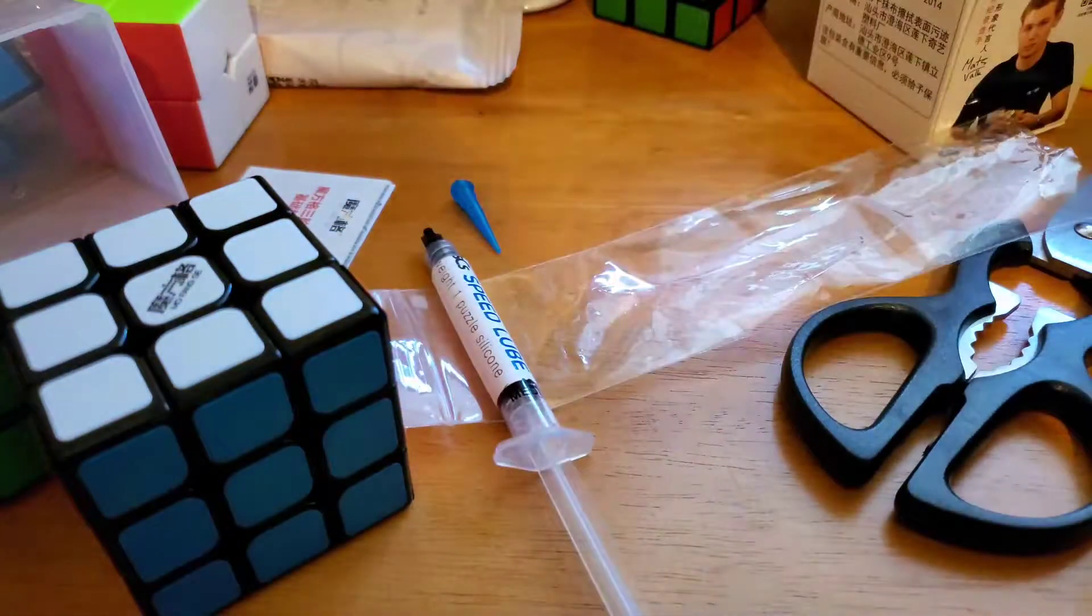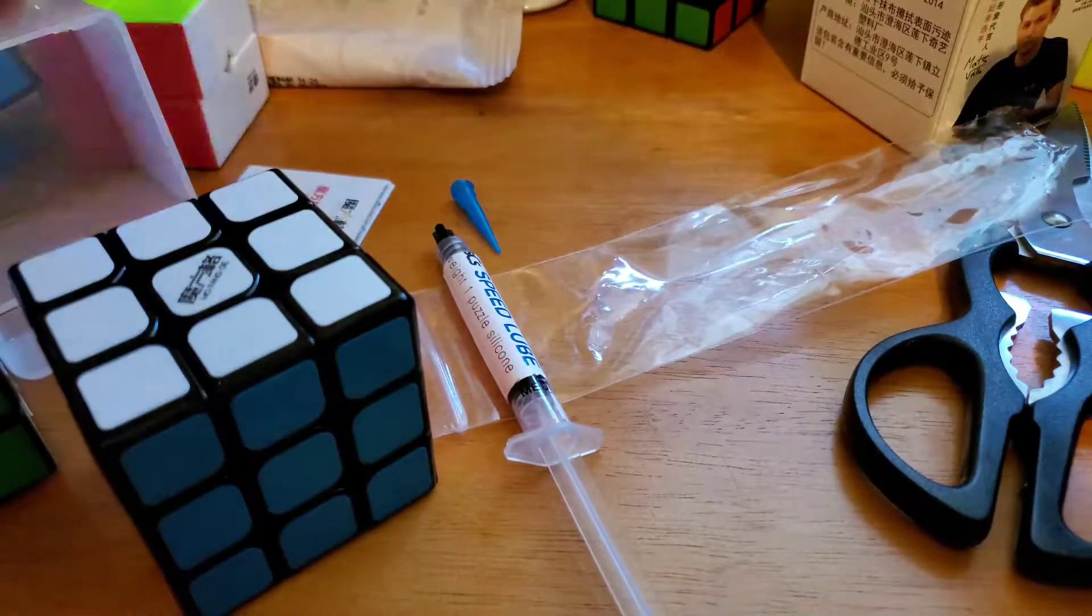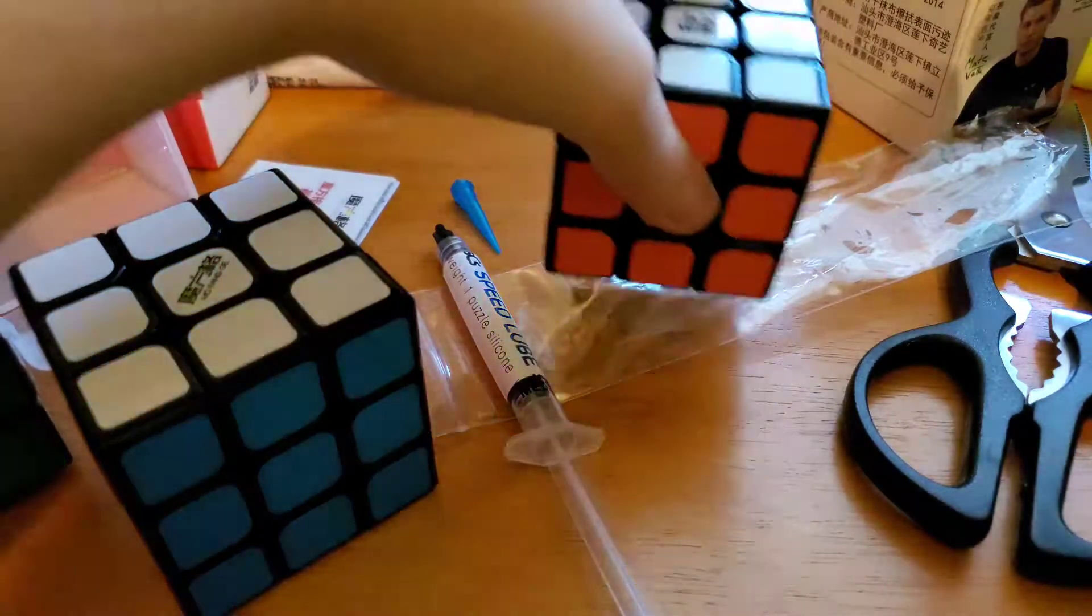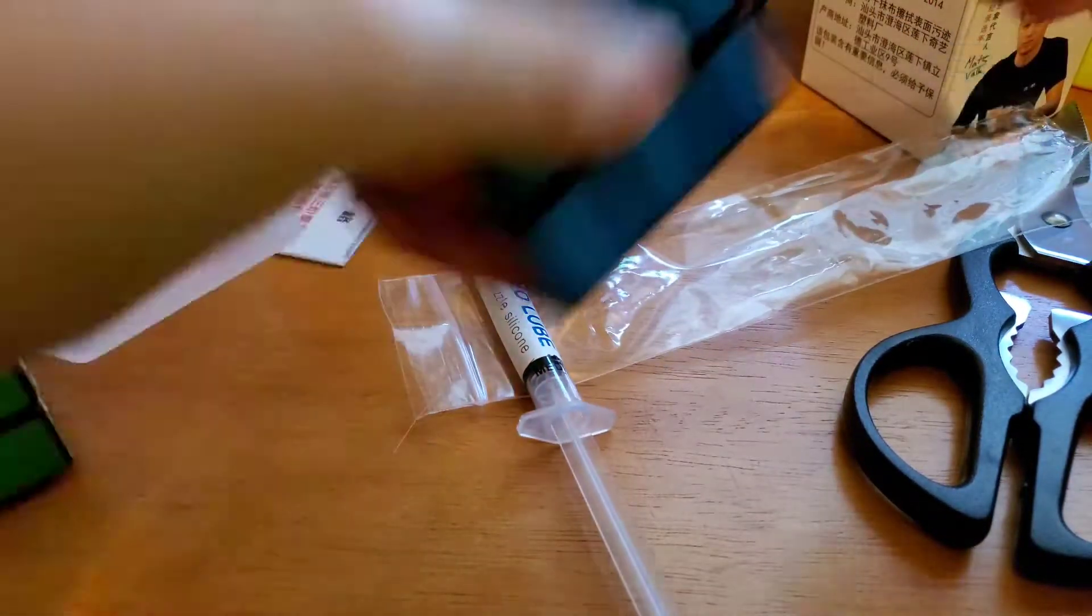I need to get rid of spring noise on a few other cubes like this. This MF3S2. It's a mini Owl Long over here. My MGC. And obviously the Thunderclap.